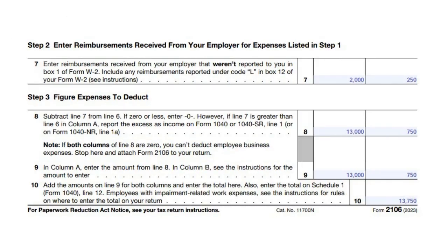Step two: enter reimbursement received from your employer for expenses not listed in step one. Everything you put before — if there are any reimbursements you received — you have to put them here. In our case, we put $2,250 on line seven. Step three: figure expenses to deduct. Subtract the reimbursement from your total. Subtracting $2,000 from $15,000 gives $13,000 on line eight, and subtracting $250 from $1,000 applies to the second column.